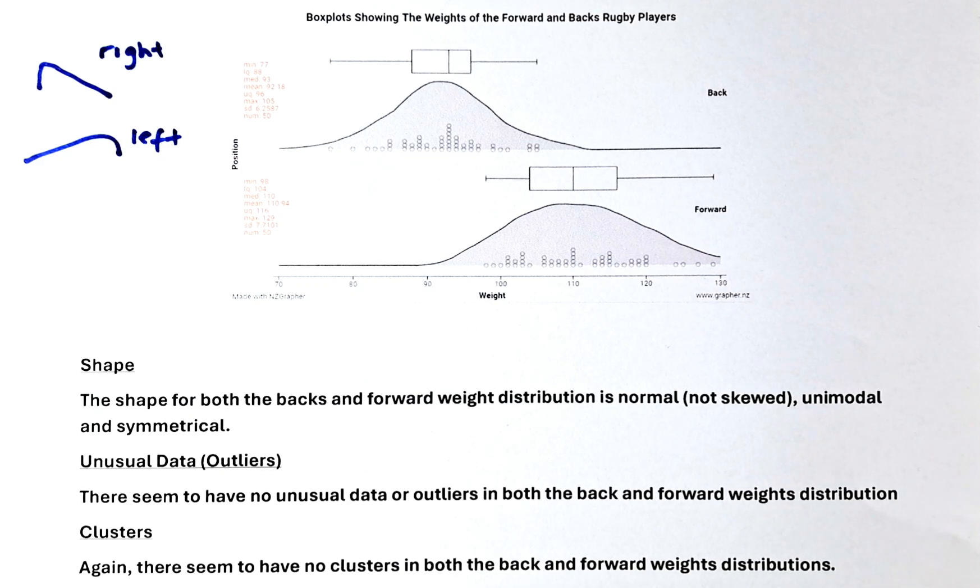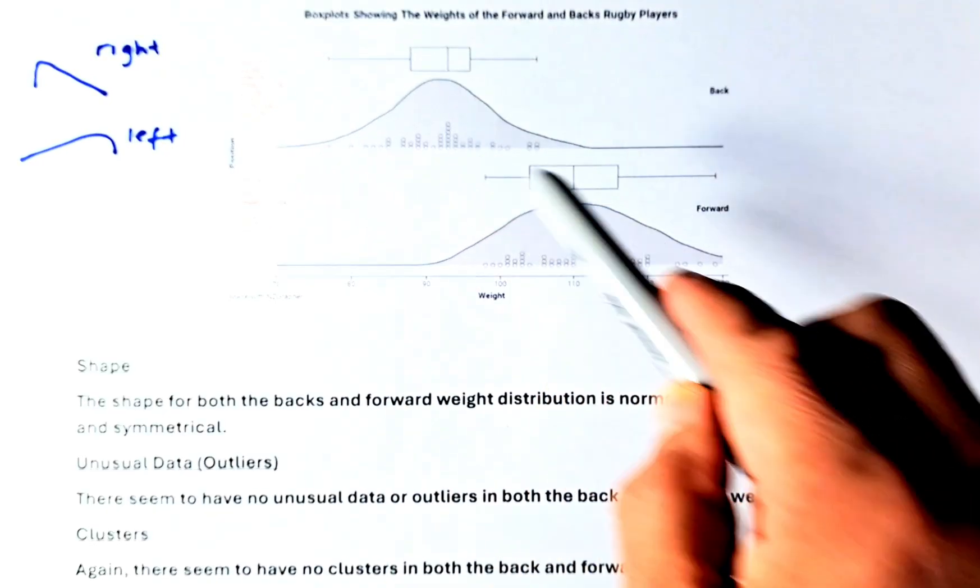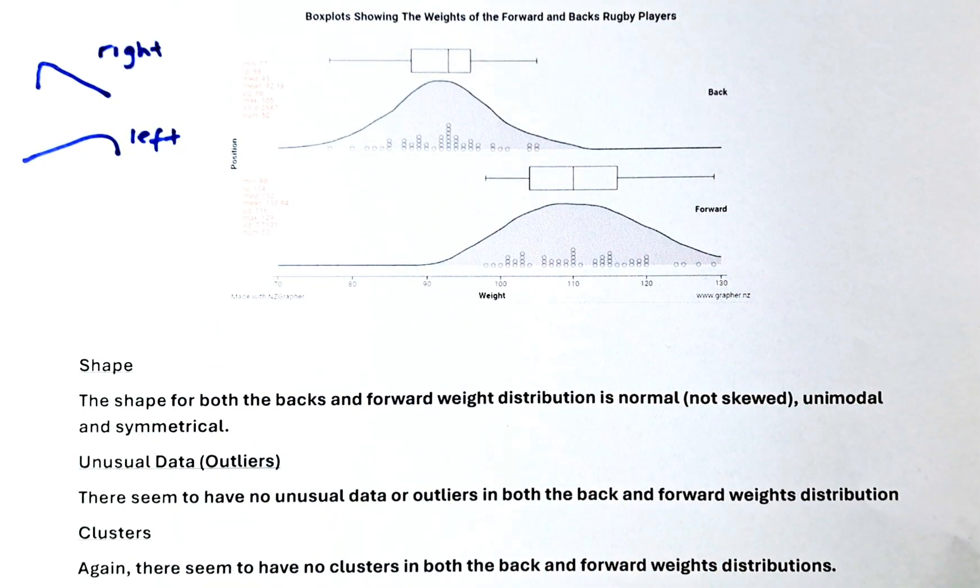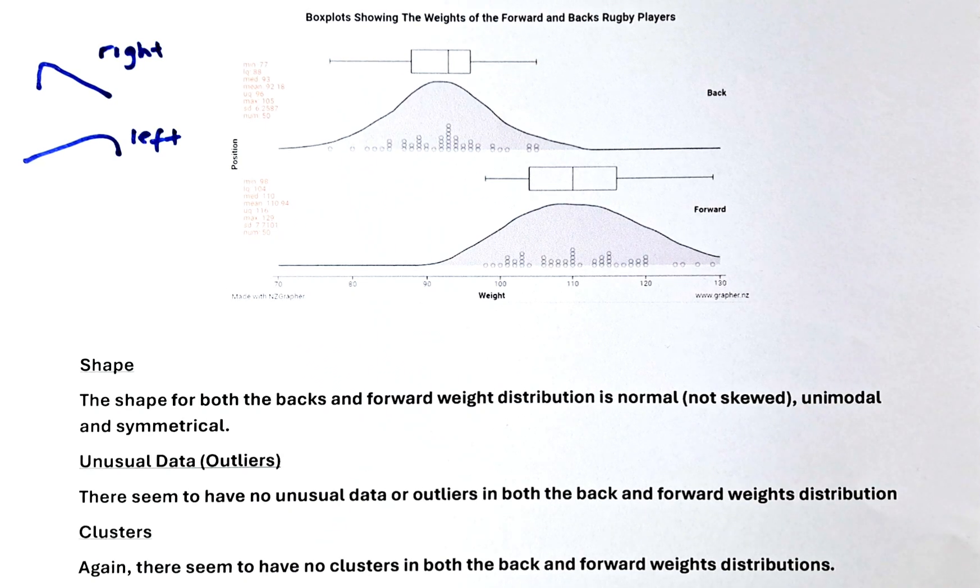Last but not least we're going to look at clusters. Cluster means the groupings. So in this case it's all in one group. So we say again there seems to be no cluster in both the back and the forward weight distribution.